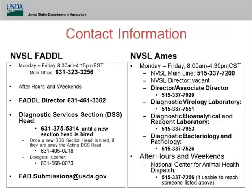Contact information: call 631-323-3256. If there's no answer or it's after hours, call 631-375-5314 — one of us acting as DSS section head will be carrying that phone. AIMS contact numbers are also listed, though they've recently renamed some departments. You can also reach us by email at FAD.submissions.usda.gov.